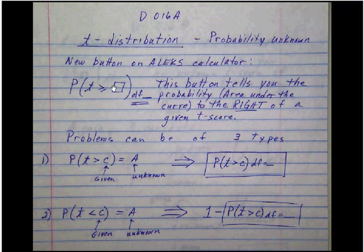Keep in mind that you have to have that t-score, and you also have to have this thing called the degrees of freedom, which they will give us in all of the early problems. Later on, we'll have to find that ourselves. The problems can be of three types.